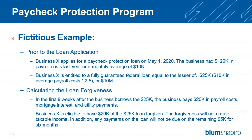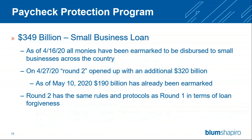Any payments will not be due for six months — note that interest is accruing monthly. The PPP was released at the end of March with $349 billion in total. As of April 16th, all of that money was used up. Round 2 opened with an additional $320 billion on April 27th, and as of May 10th, $190 billion has already been used. Round 2 has the same rules and protocols as Round 1 in terms of loan forgiveness.